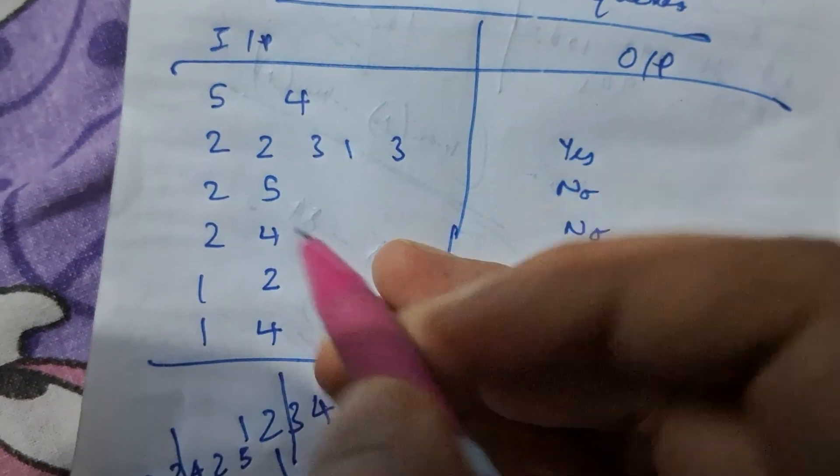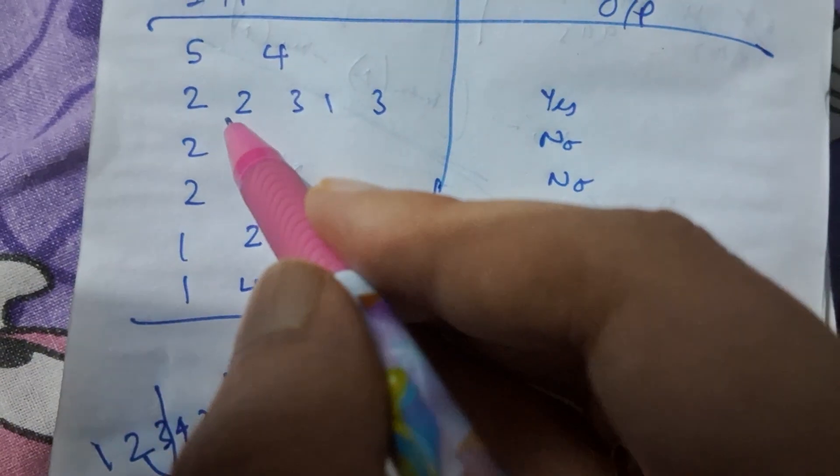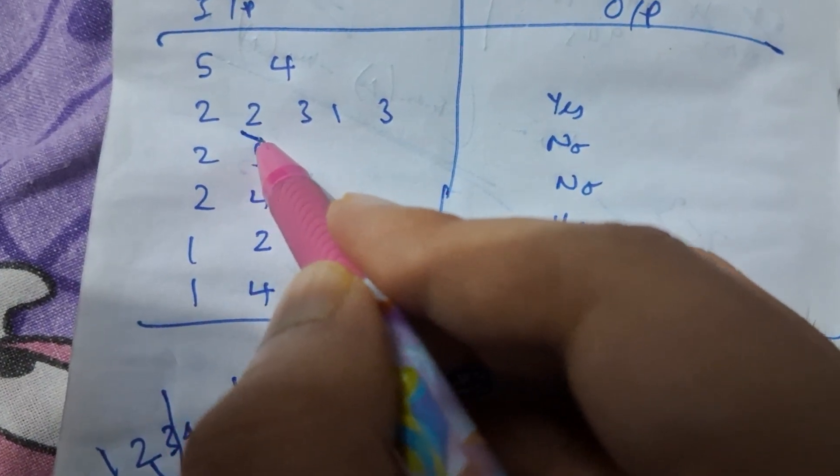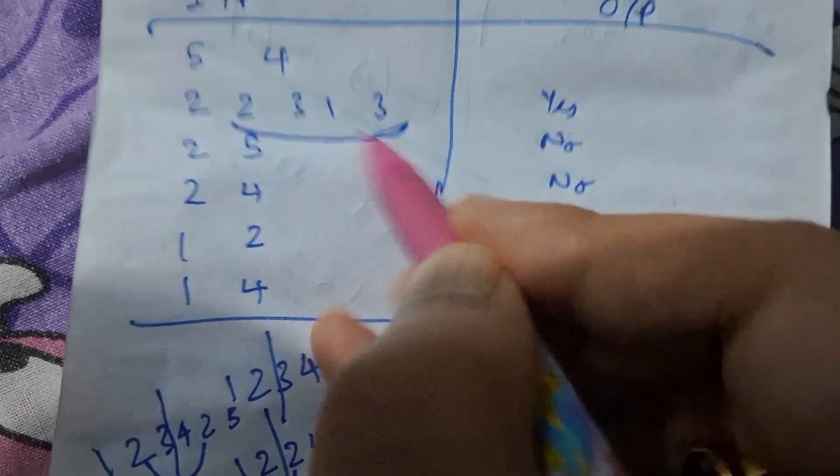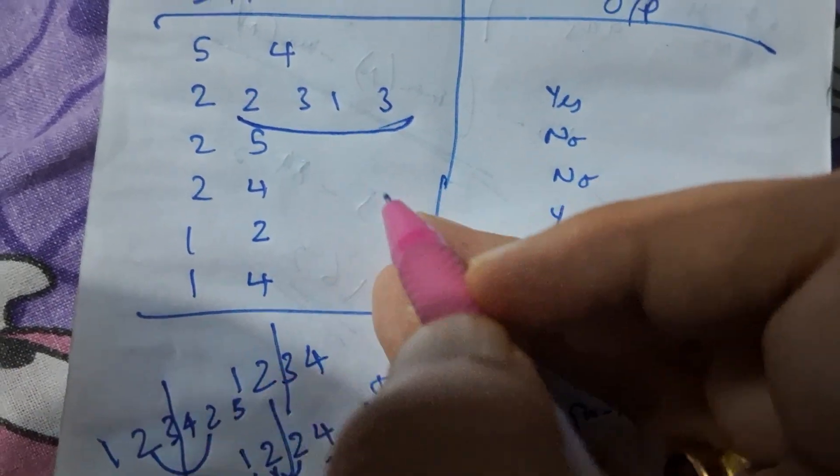Now for every query, let's say for 2,5. If we are taking 2,5, that means this array. Now this array itself is anti-palindromic - it can be proven, you can check.